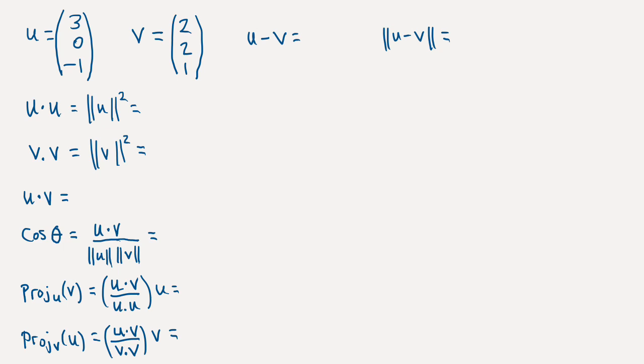So let's suppose we have two vectors in R3. u equals 3, 0, minus 1 and v equals 2, 2, 1.